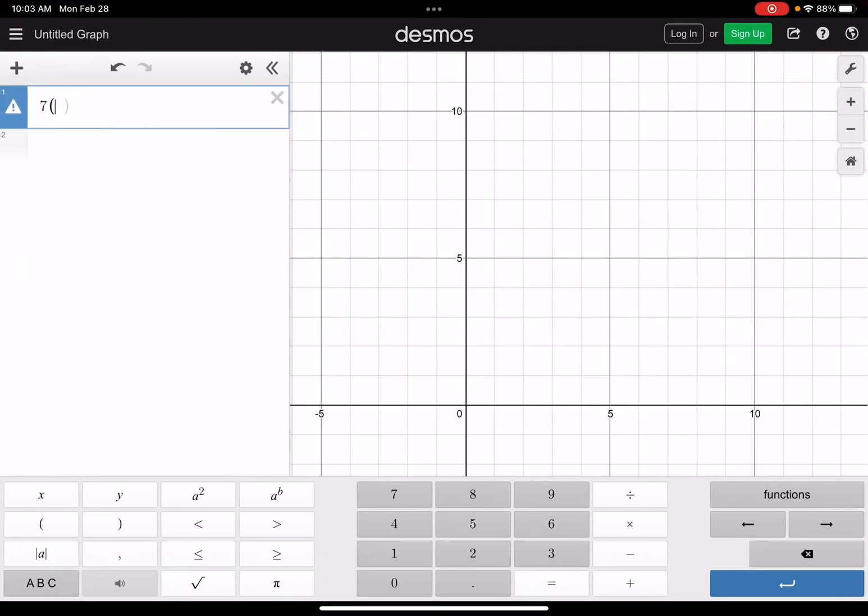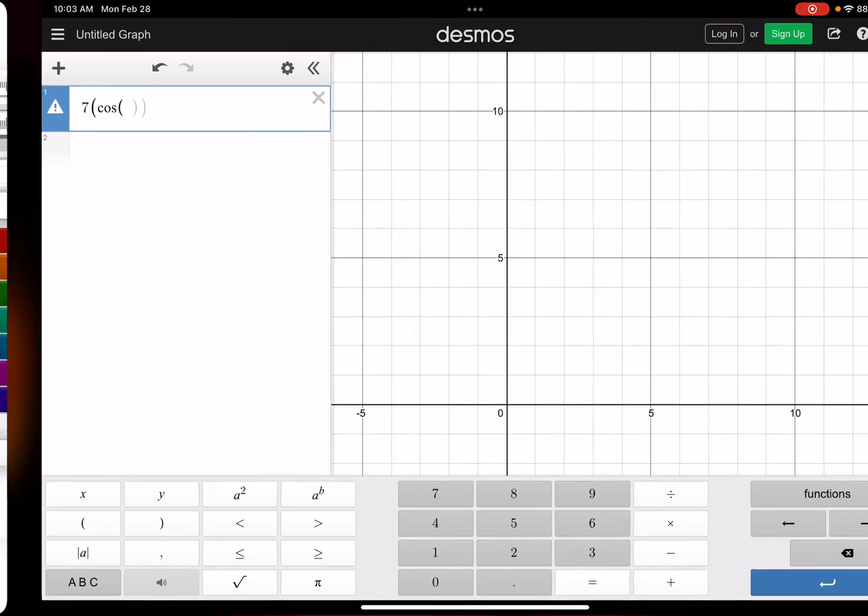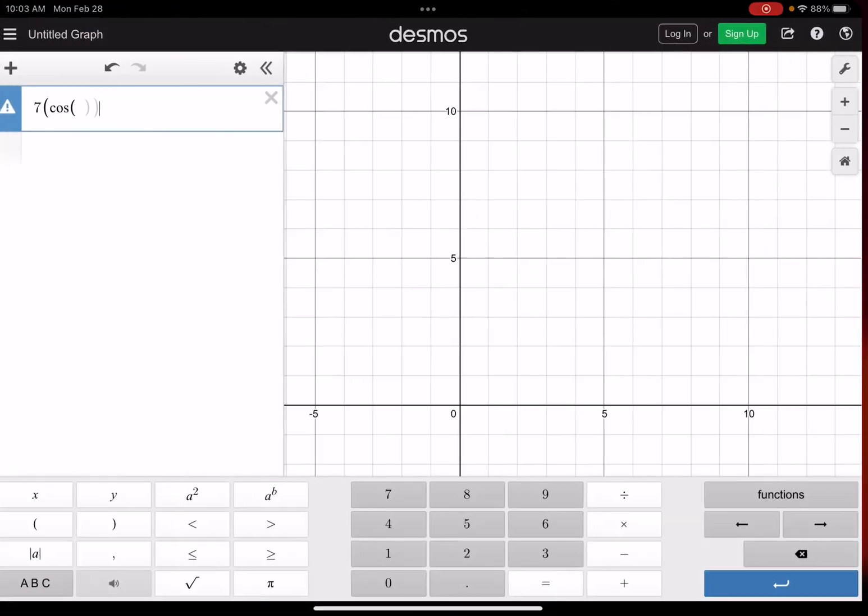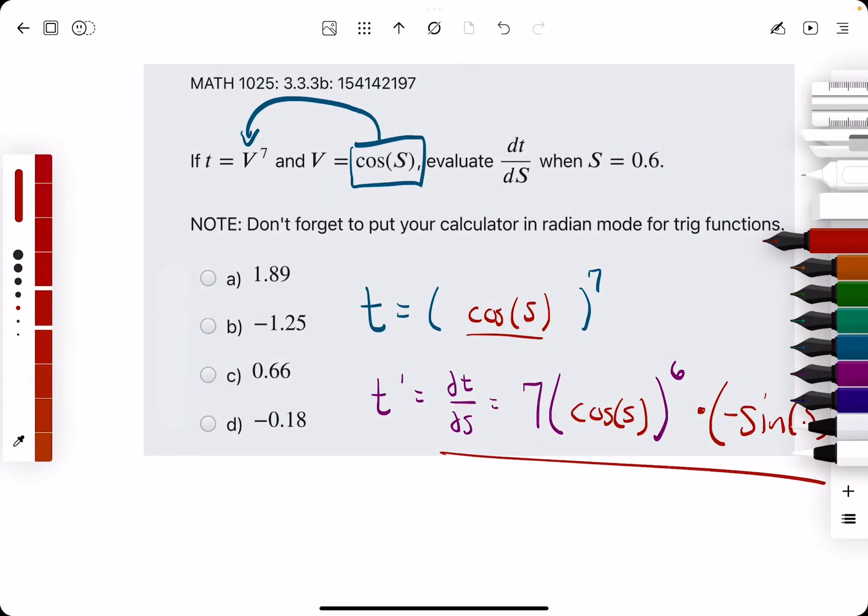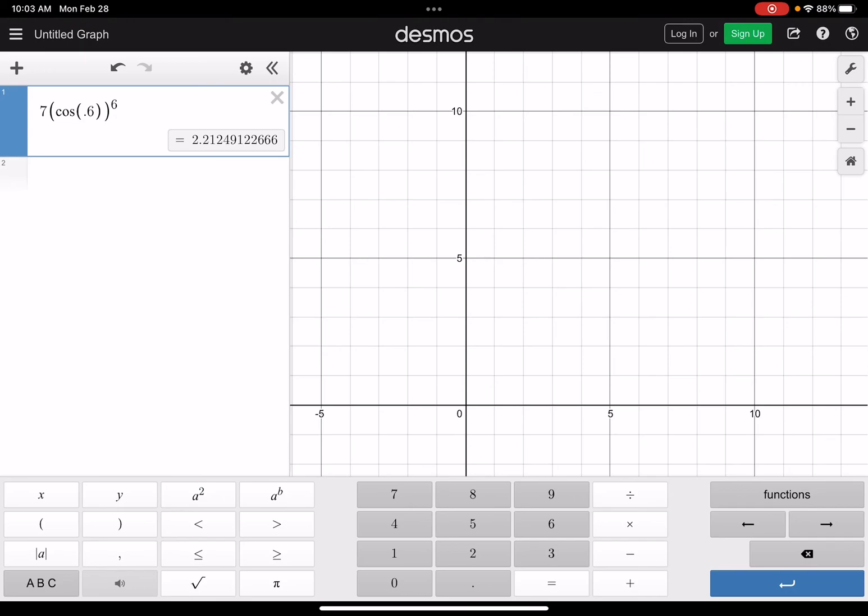7 times cosine of, let's really look at the number, 0.6, cosine of 0.6, all raised to the sixth's power. And then, times the negative sine, negative sine of 0.6. That will give us negative 1.25.